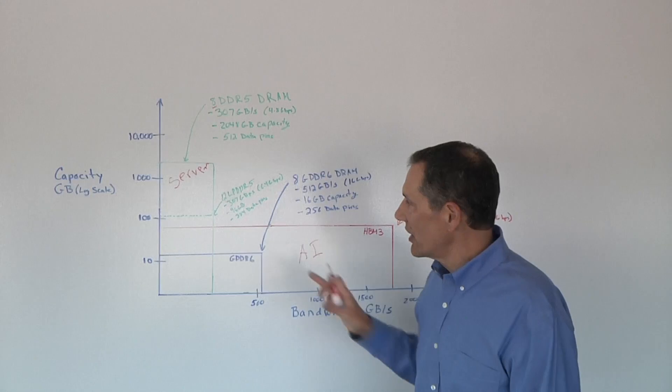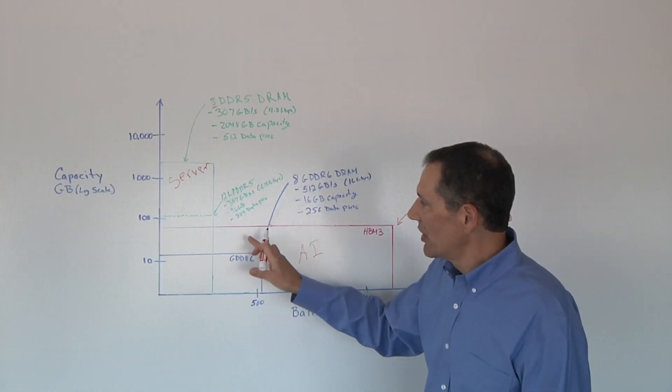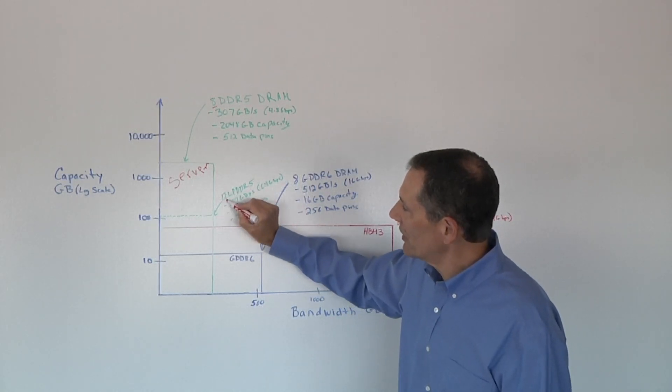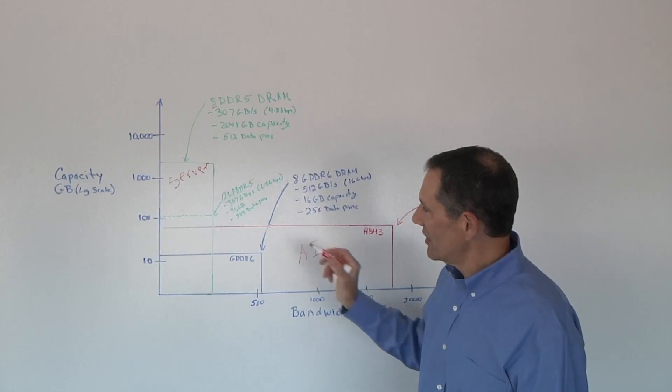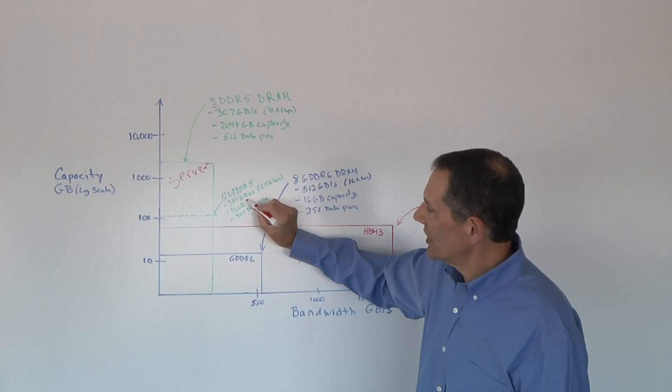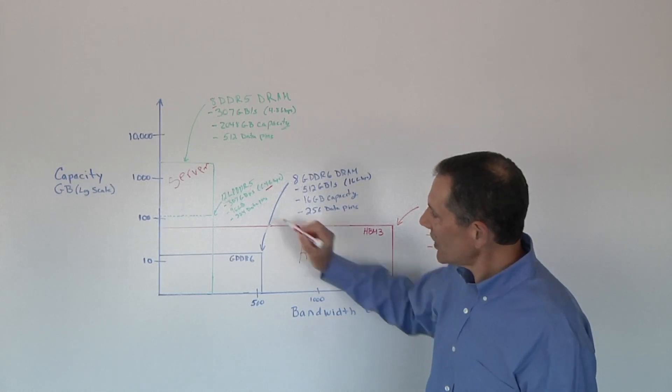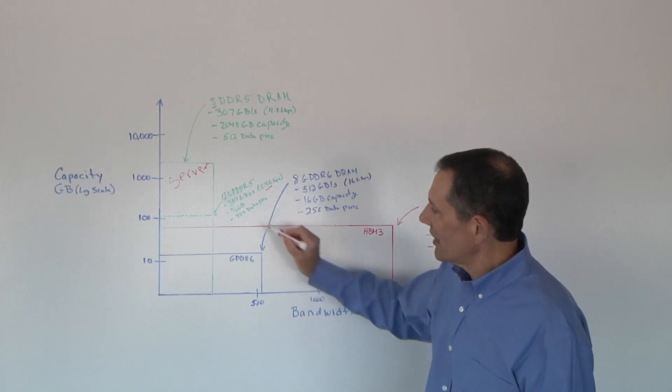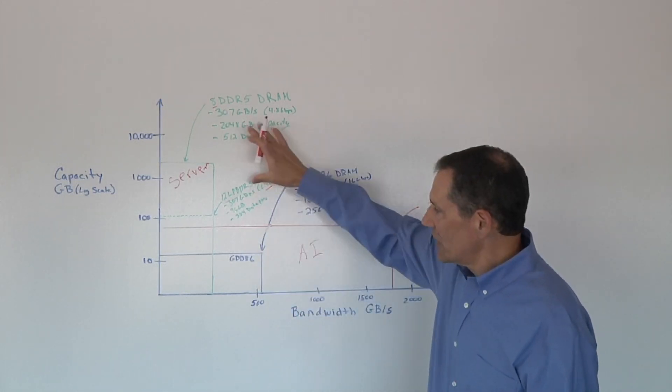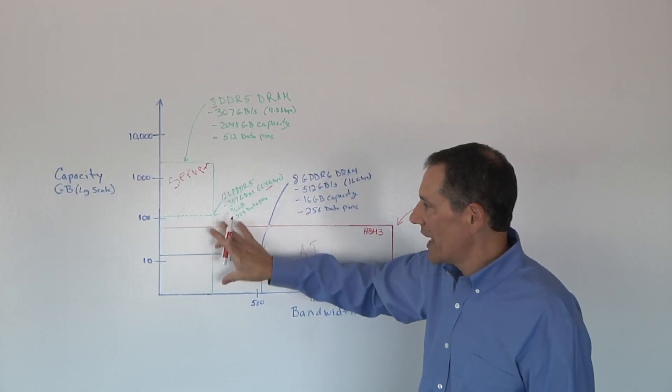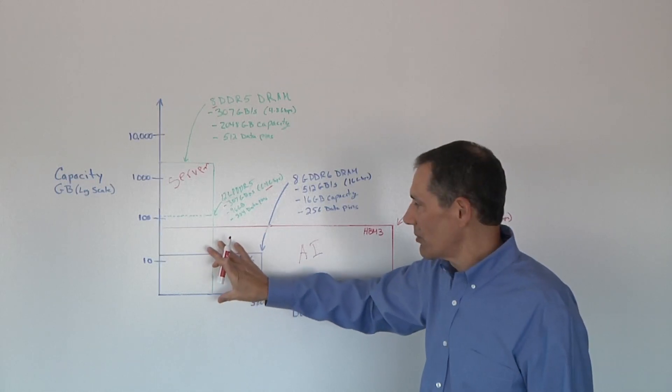But you also have down here LPDDR. LPDDR also gives you a pretty decent capacity. In this case, I'm using now 12 LPDDRs to give you that same bandwidth. So I've got 370 gigabytes of performance, 6.4 gigabits per pin. This gives you just under 100 gigabytes of capacity, and I've got to deal with 384 pins on my board. So on this side of the chart, DDR and LPDDR give you a pretty good balance of capacity and performance.